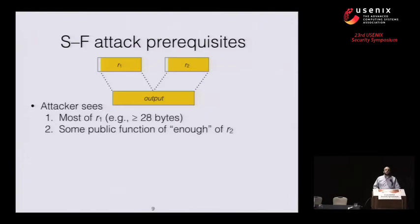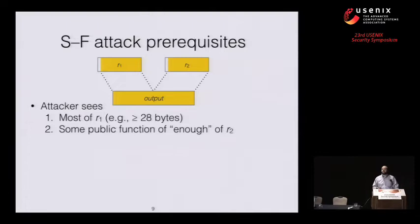Stepping back, what's required to actually perform this attack is pretty simple. In addition to the secret number d, the attacker needs two pieces of information: they need to see most of R1 — at least 28 bytes — which forms the initial output, and they need some public function of enough of R2 to be able to validate the choice. In a couple of slides we'll see an example of this in TLS.